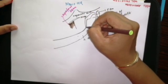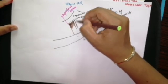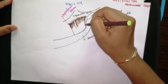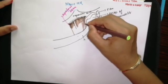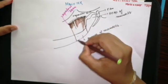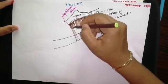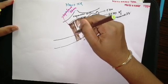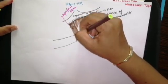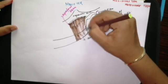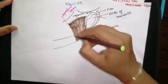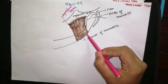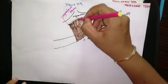The deep fibers originate from the deep surface of the zygomatic arch. All the fibers get inserted into the lateral surface of the ramus of the mandible. The superficial fibers insert into the lower part of the lateral surface of the ramus of the mandible, and the deep fibers insert into the upper part.